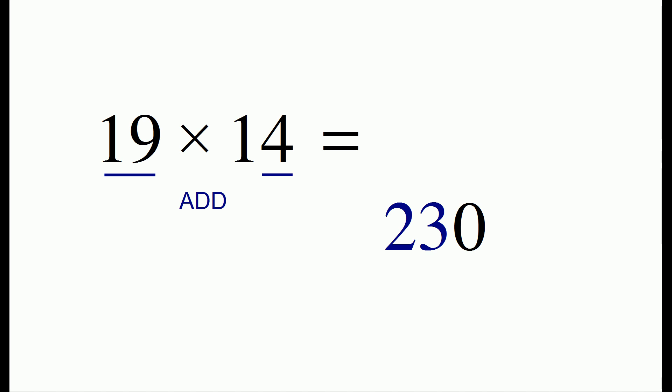The second step is to take 9 times 4, which is 36. And the final step is to add those two intermediate results together to get 266.